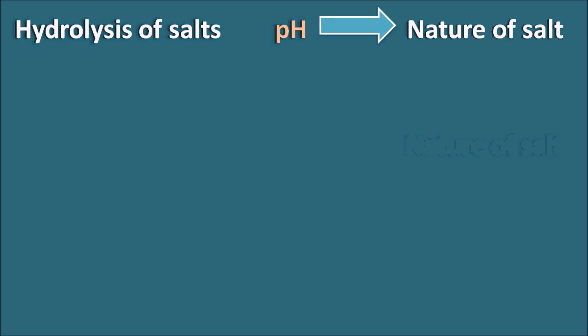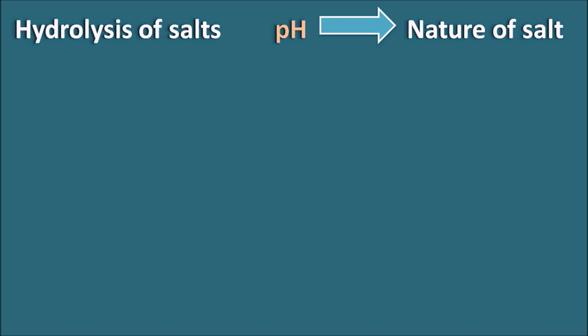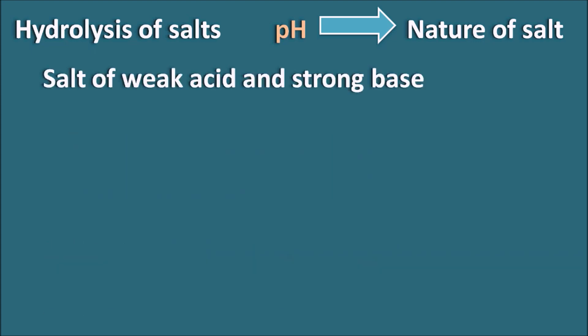Salts can be classified based on how they are formed from an acid and a base. For example, we can have salts of weak acid and strong base, such as sodium acetate. Sodium acetate is obtained from the combination of acetic acid, which is a weak acid, and sodium hydroxide, which is a strong base.